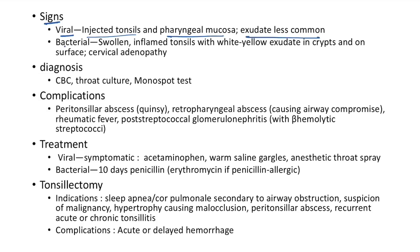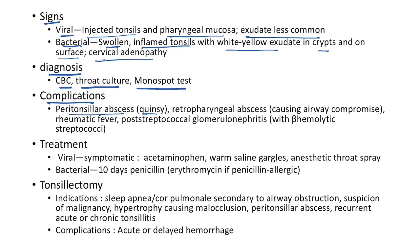Diagnosis of pharyngotonsillitis: complete blood count, throat culture, and monospot test. Complications if not treated properly: peritonsillar abscess (quincy), retropharyngeal abscess causing airway compromise, rheumatic fever, and post-streptococcal glomerulonephritis with beta-hemolytic Streptococci.